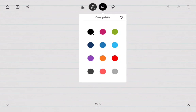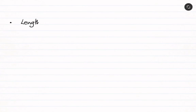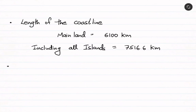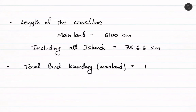The length of the coastline of mainland India is 6,100 km, and including all islands it is 7,516.6 km. So the mainland coastline is 6,100 km, and if islands are included, it becomes 7,516.6 km.